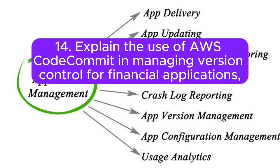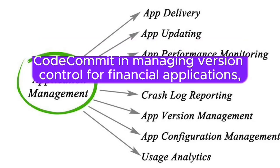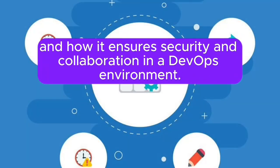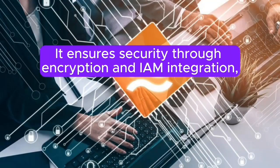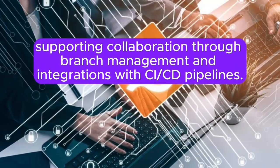Question 14: Explain the use of AWS CodeCommit in managing version control for financial applications, and how it ensures security and collaboration in a DevOps environment. Answer: AWS CodeCommit manages version control for financial applications, providing secure and scalable Git-based repositories. It ensures security through encryption and IAM integration, supporting collaboration through branch management and integrations with CI/CD pipelines.